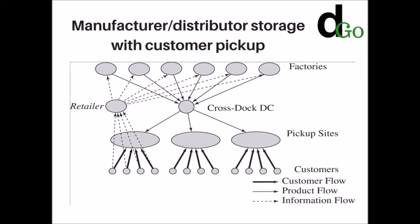The next option is manufacturer or distributor storage with customer pickup. In this approach, inventory is stored at the manufacturer or distributor warehouse, but customers place their orders online or by phone and then travel to designated pickup points to collect their merchandise. This is used by Amazon Lockers and similar services.